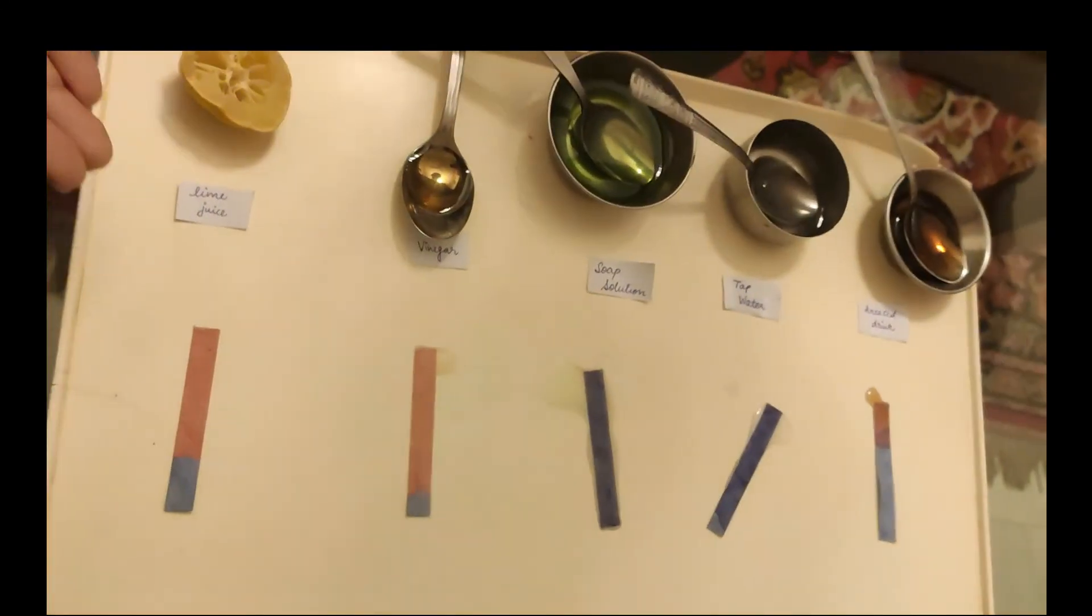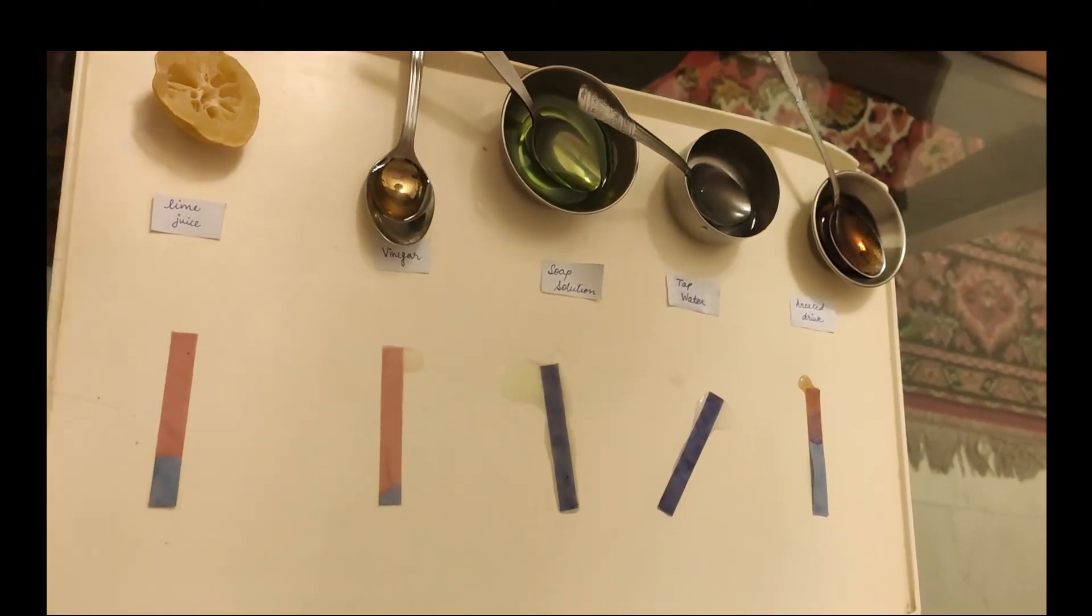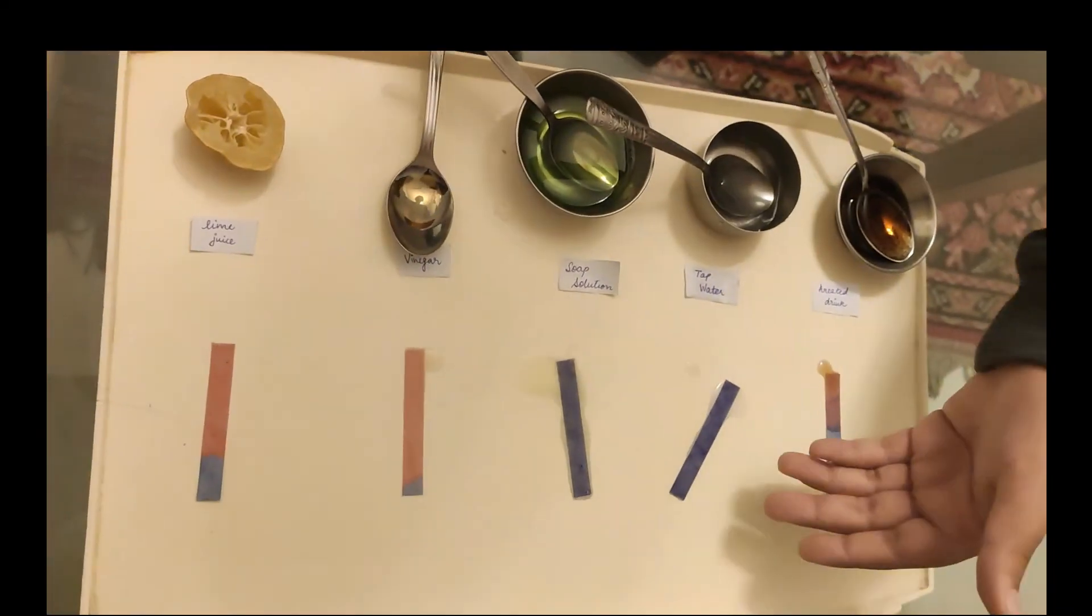Litmus papers help us to identify which objects are acidic and which objects are basic. Some can even be neutral.